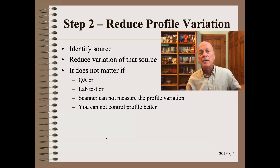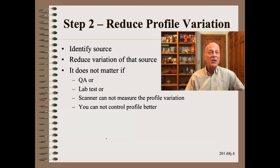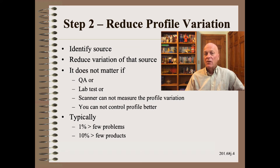It matters not if QA, the test lab, or the scanner cannot see or measure the profile variations that are responsible. It matters not whether you or your supplier can do any better with profile. This threshold of pain is quite small — something on the order of one to ten percent variation. At one percent, you have few problems, and at ten percent, you have few products.